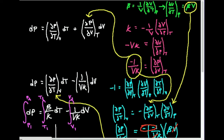What we've been dealing with in the past few videos is how to expand partial derivatives — how to take a variable that's changing and calculate its change, assuming it's a function of more than one variable. Now we're going to do this determination for pressure: how to calculate a change in pressure. An example of such a variable is pressure.